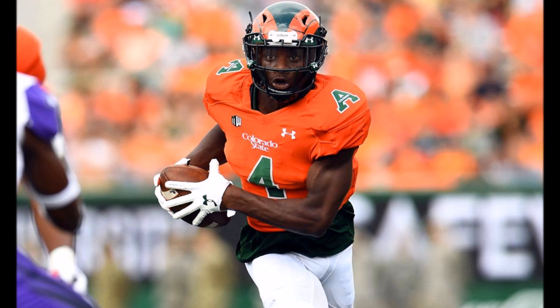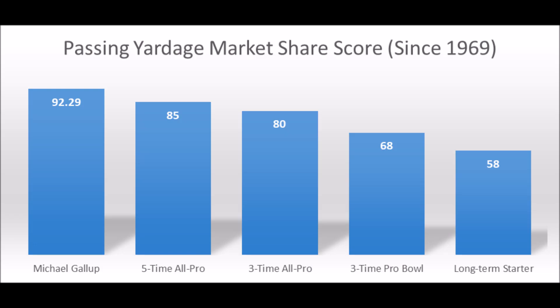Getting into Michael Gallup: his passing yardage market share production score is 92.29 out of 100, which hits every single market share production threshold you want. The majority of five-time all-pro wide receivers had at least an 85 or higher score. Three-time all-pro had 80 or higher. Three-time pro bowl had 68 or higher. And long-term starter had 58 or higher. So with Michael Gallup, you pretty much hit every single bottom-end threshold, whether you're talking all-pro, pro bowl, or starter wide receivers.